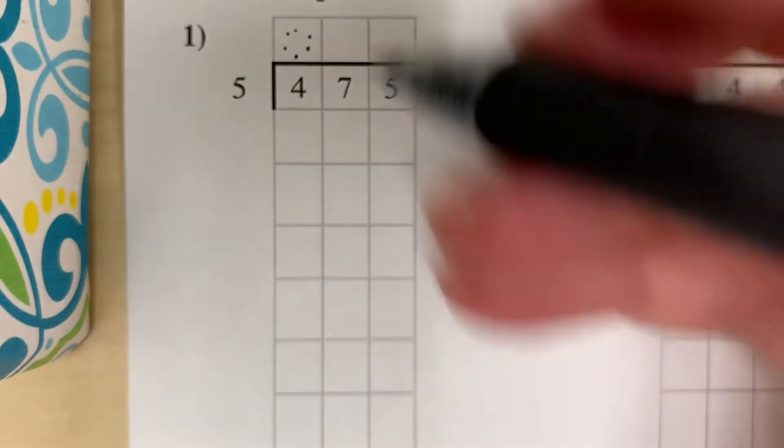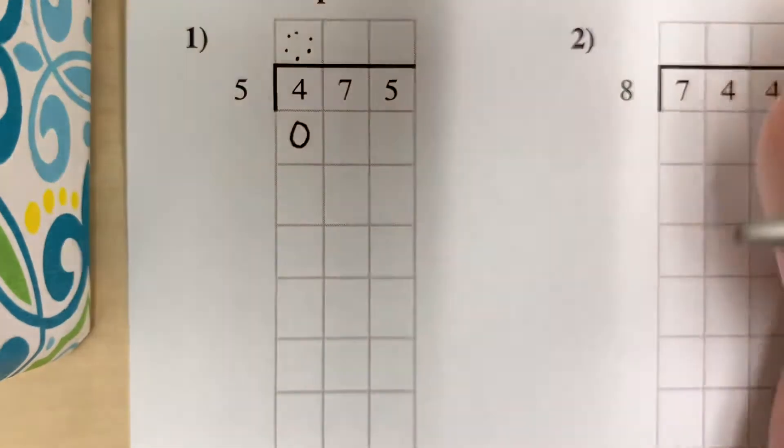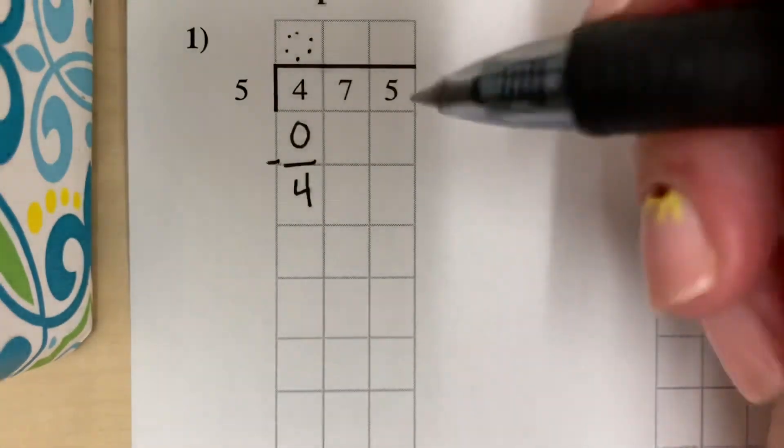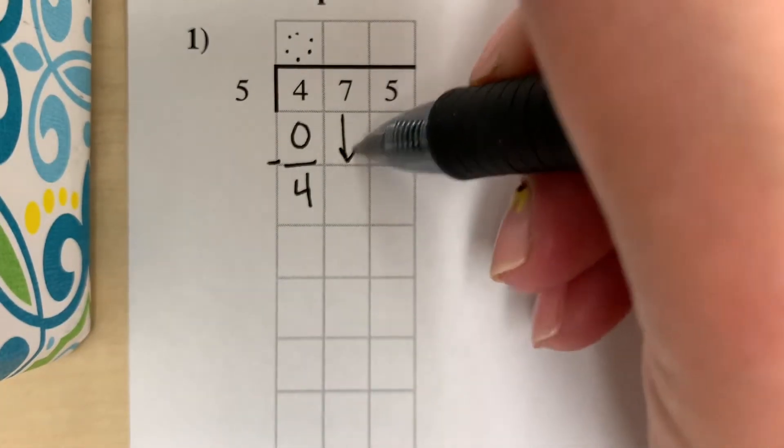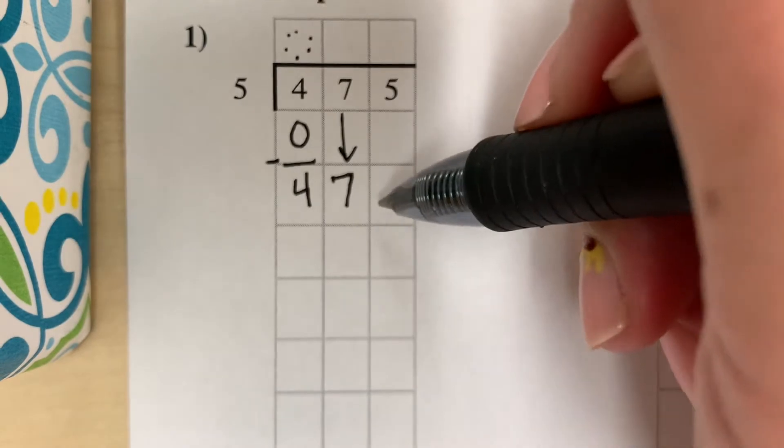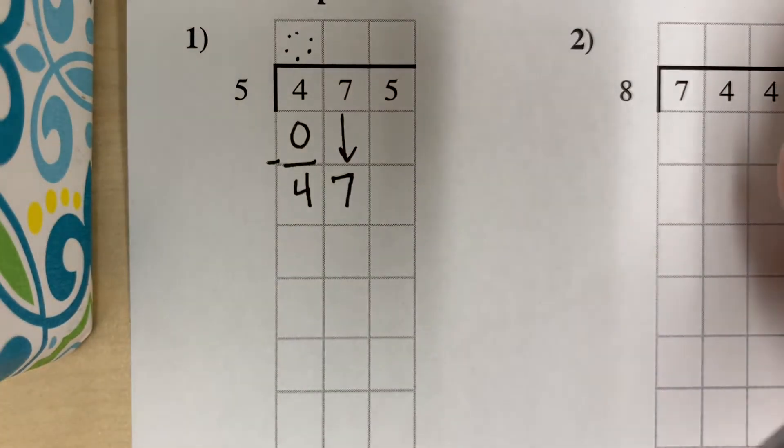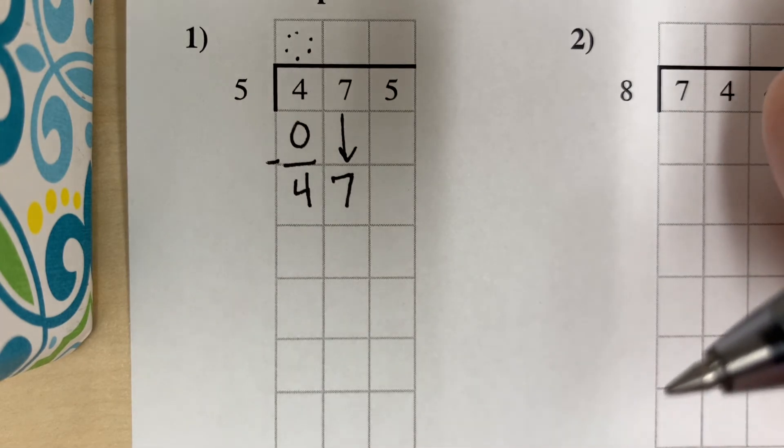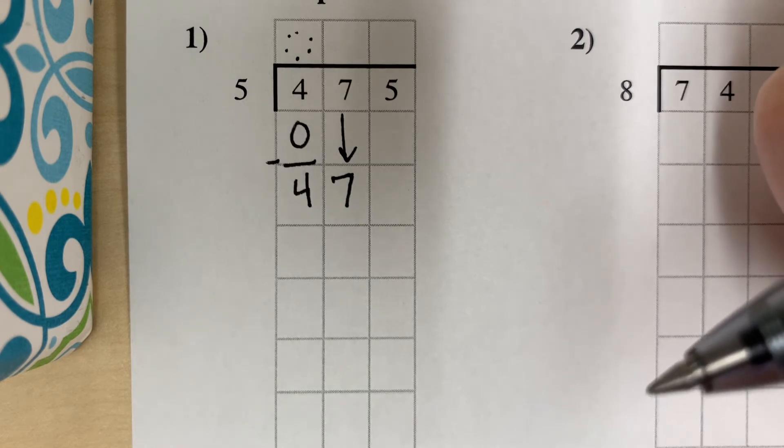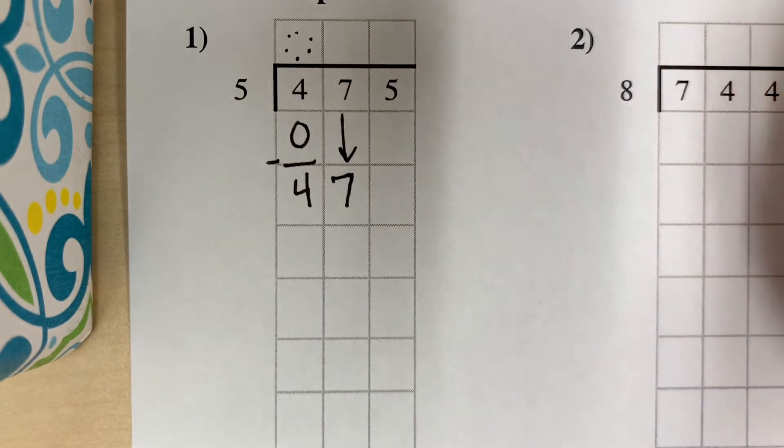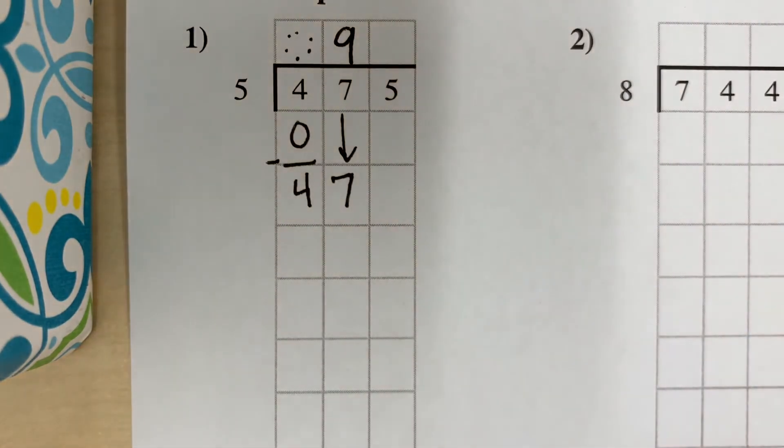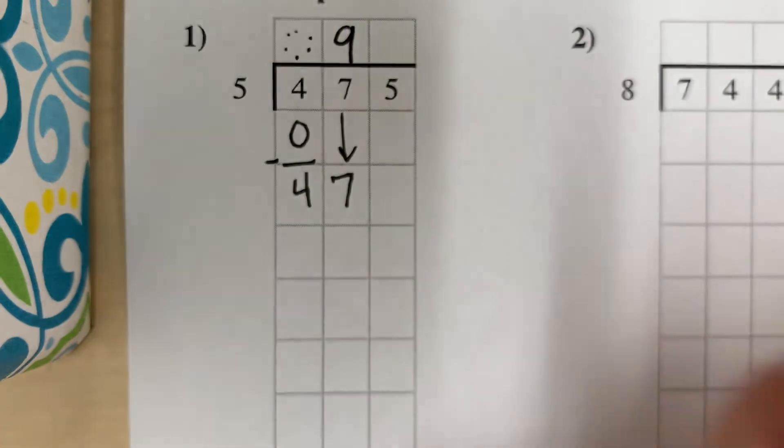Because 5 went into 4 zero times, we still have that 4 left over and it comes down here, and we bring down our 7 next door. Now we have 47. If we have 47, how many groups of 5 can we make? I know 5 times 10 is 50 and 5 times 9 is 45. So we can make 9 groups of 5 with some leftover. And 9 times 5 is 45.